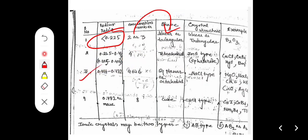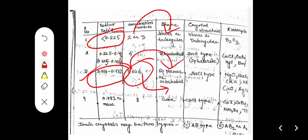If the radius ratio is between 0.414 and 0.732, the coordination number is either 4 or 6. For 4, the shape is square planar; for 6, the shape is octahedral. The crystal structure is NaCl type. Examples include MgO, NaBr, CdS, CoO, and HCl.